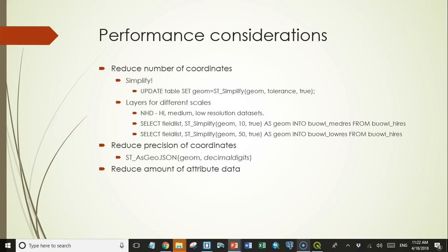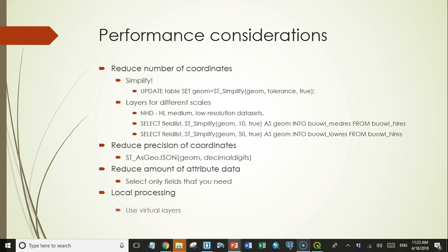While coordinate data is low-hanging fruit, you can also limit the amount of attribute data that is returned. Some data, especially from government agencies, can have dozens of fields but only a few that really contain useful information. So if you can select only the fields that you need, you can potentially save a lot of bandwidth. You can also use virtual layers to create buffers and other geometries with a SQL query, using the client computer's CPU to create buffers on the fly rather than storing them on the server and sending them across the internet. Whether this is faster or not depends on your client speed as well as the server speed and internet speed, but it would be worth trying out in your situation.